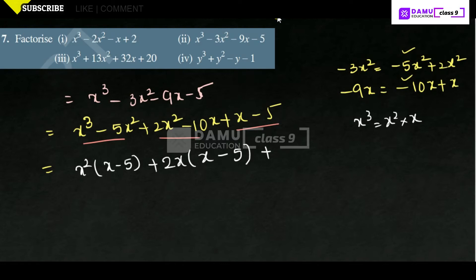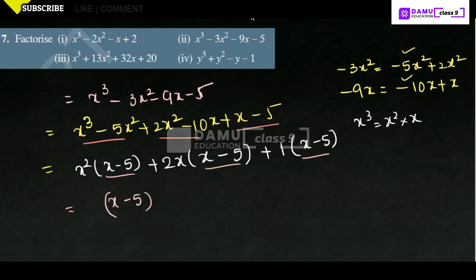Plus, you can take 1 outside giving x - 5. From all these terms, what you can take common? x - 5 is common in all three groups. Taking x - 5 outside, we get x - 5 into x² + 2x + 1.